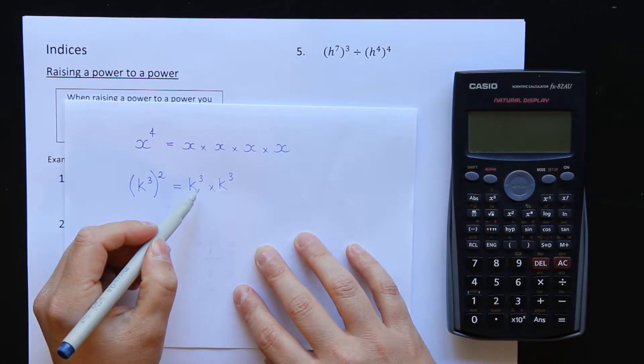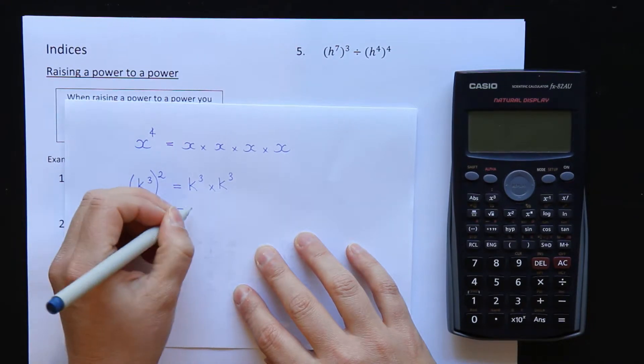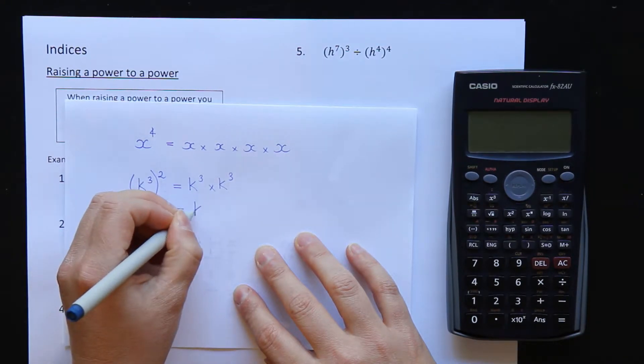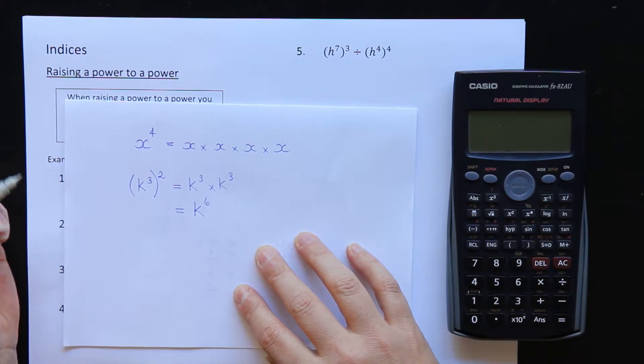To simplify that, we learned how to multiply things with the same bases. All we have to do is add the powers together. So that becomes k to the power of 6. Now when we do these today, we don't want to have to expand them out like this all the time. I just wanted to show you how this works.